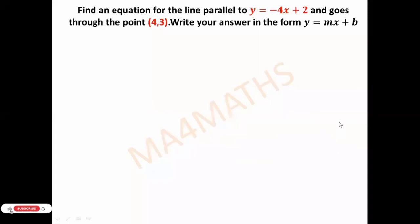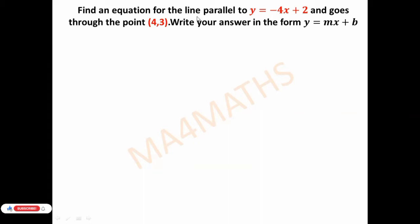Assalamu alaikum. Today's video we have a problem to solve: find an equation for the parallel line y = -4x + 2 that goes through the point (4, 3). Write your answer in the form y = mx + p. First of all, we know what we have to find — the equation of a line in slope-intercept form. We have a parallel line equation and one point that the line passes through.